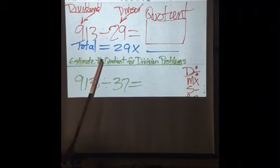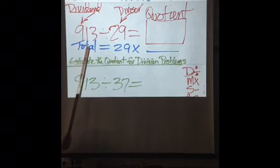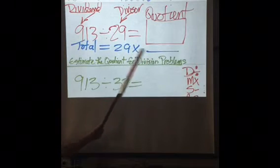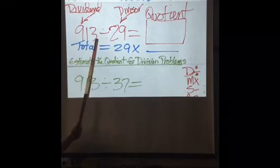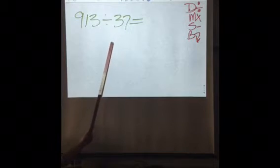For instance, we could do it backwards since the dividend is the total. It would be like saying 29 times what equals 913. What we're going to talk about today is estimating. Estimating is like rounding except we don't want to have any remainder.